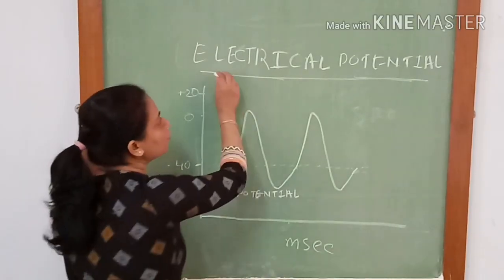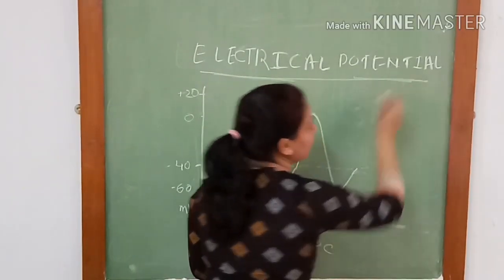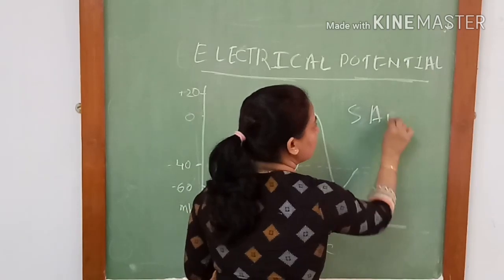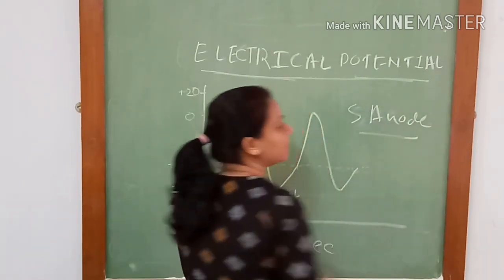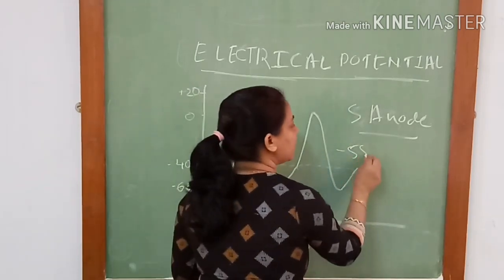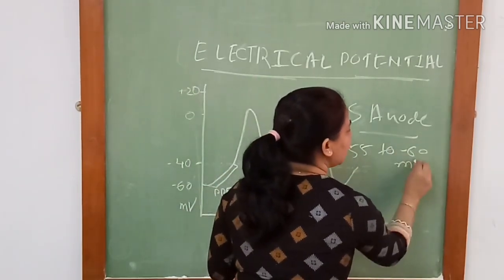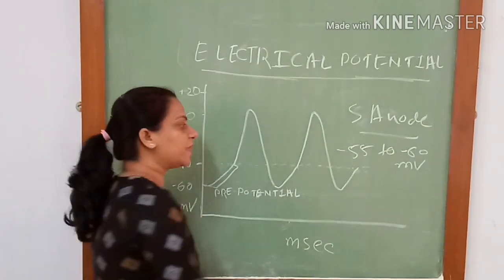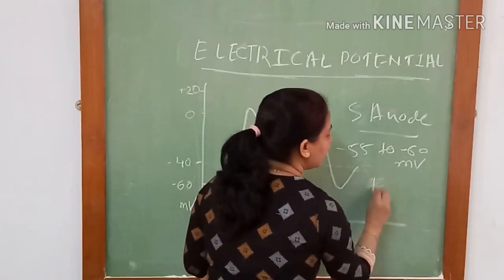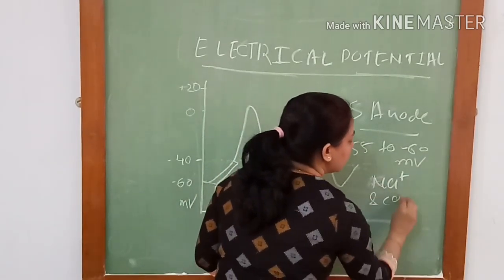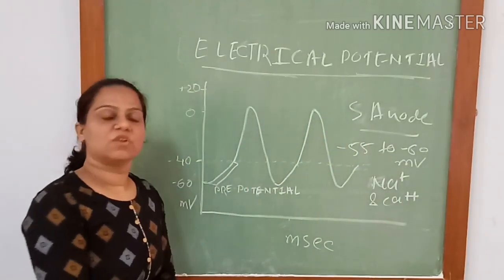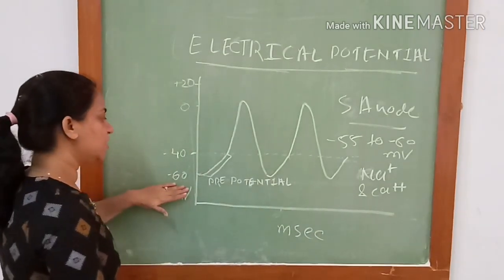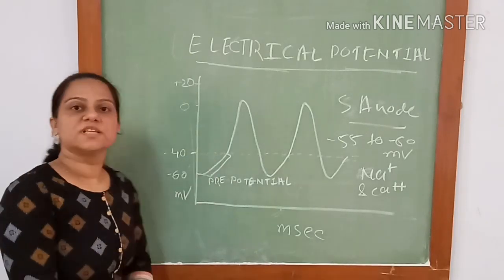Hello everyone. Today I am going to cover electrical potential in pacemaker tissue. Pacemaker tissue, as we know, has a membrane potential of around minus 55 to minus 60 mV. This membrane potential has an unsteady nature, due to the presence of leaky channels which are leaky for sodium and calcium ions. This causes entry of sodium and calcium ions inside the cell continuously, bringing the membrane potential towards the positive side and forming the pre-potential.